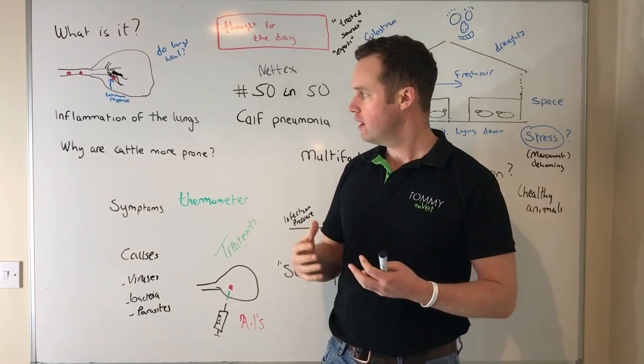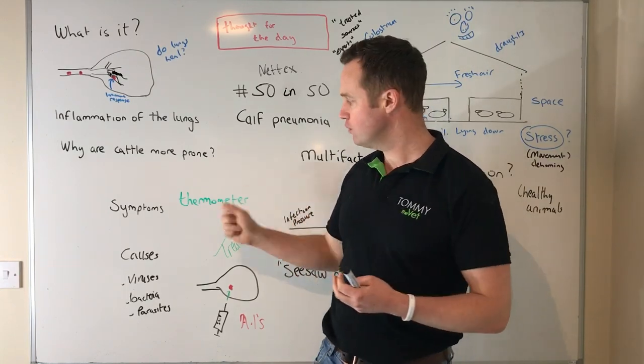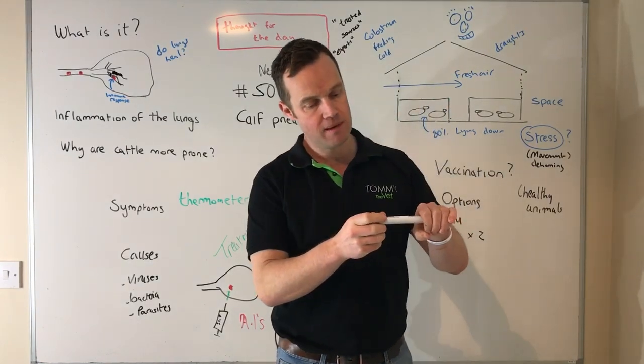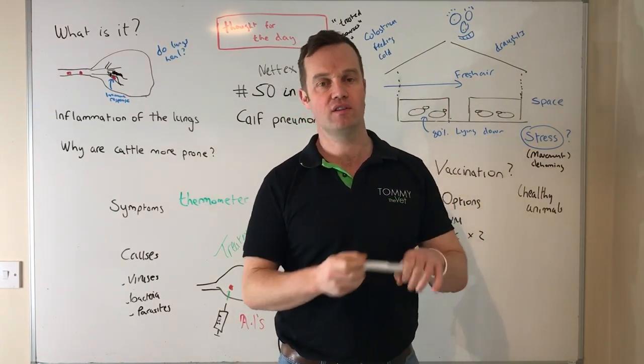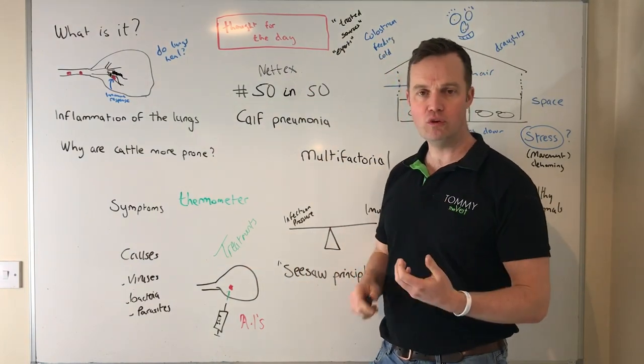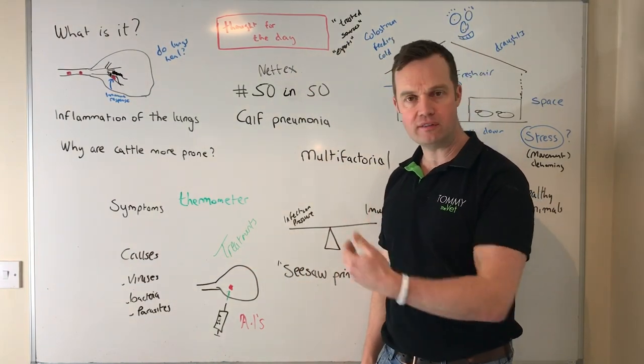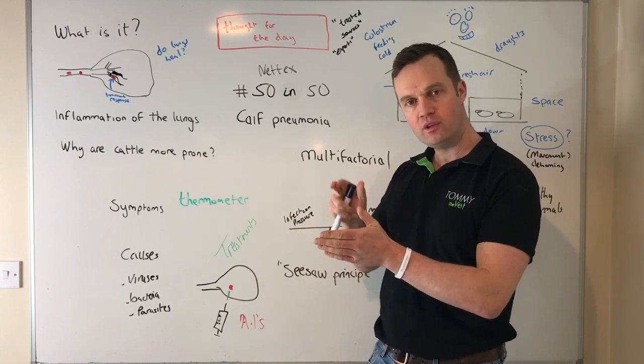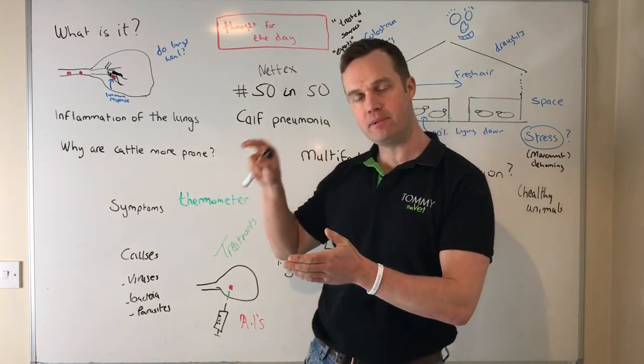An important tool on farm to monitor is to get the temperature. The temperature of the calf - what is it? It shouldn't be over 39 and a half. Again, it's a really useful tool, so we're starting to put all these things together now. If we get good at spotting pneumonia, we talk about treatments. The quicker we spot any disease and implement treatment, the better. It's all about preventing it, but of course you're going to get it occasionally.